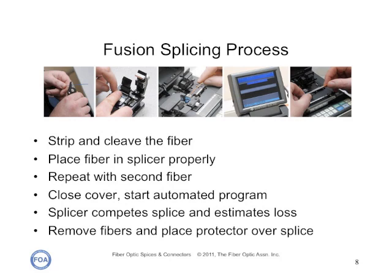The fusion splicing process is straightforward. You strip, clean, and cleave the fiber, place the fiber in the splicer jaws properly, repeat with a second fiber, close the cover, and start the automated program — the splicing machine takes over from there. It completes the splice and estimates the loss. Once finished, you remove the fibers and place a splice protector over the splice.